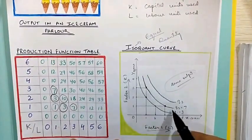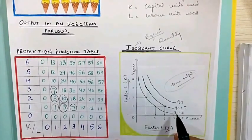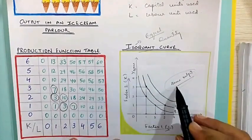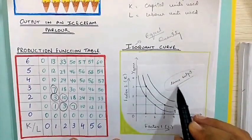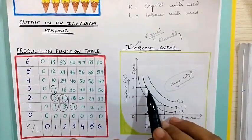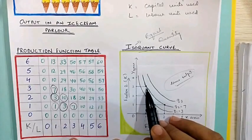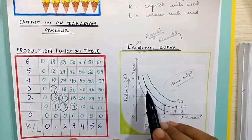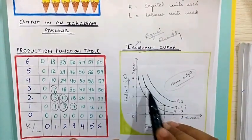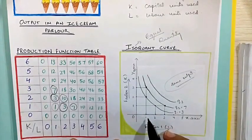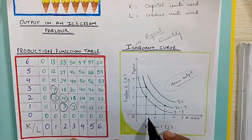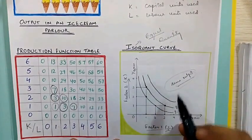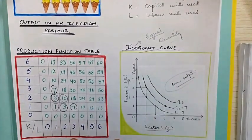Isoquants are negatively sloped, downward sloping curves, because to maintain the same level of output, if you are increasing the units of one factor of production, you have to decrease the units of another factor of production to get the same output.